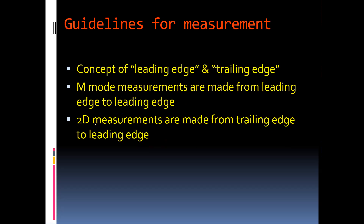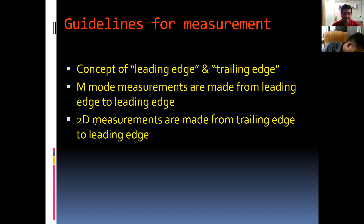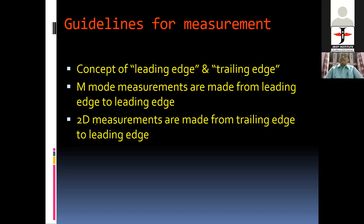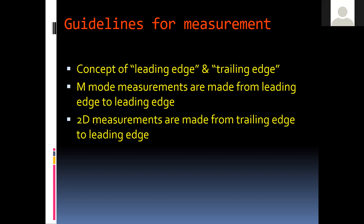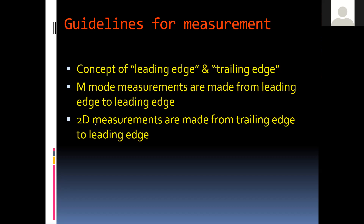Let us understand the concept of leading edge and trailing edge. Every line in echocardiography is not a geometrical line — it has a finite width. The edge closest to the transducer is the leading edge, and the edge furthest from the transducer is the trailing edge. M-mode measurements are made from leading edge to leading edge, and 2D measurements from trailing edge to leading edge. These are rules but, like all important rules in medicine, there are exceptions.